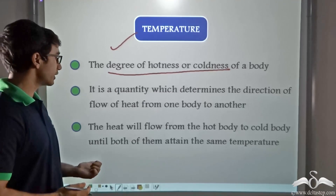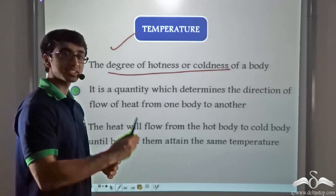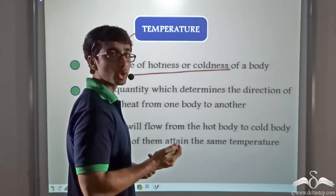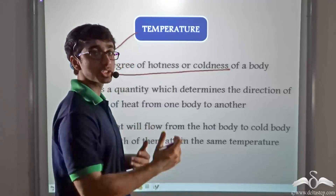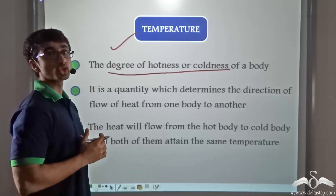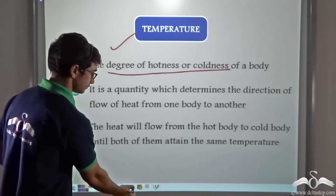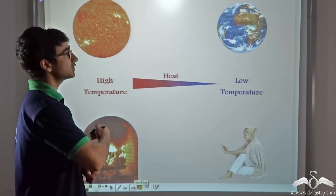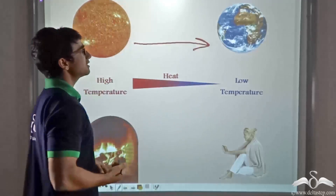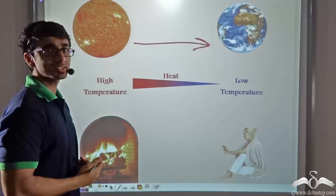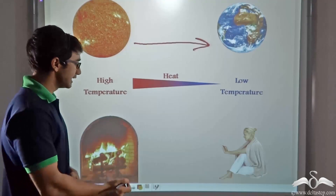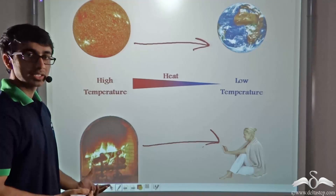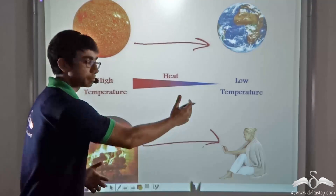Heat will flow from the hot body to the cold body until both of them attain the same temperature. That is, the hot body's temperature will come down and the cold body's temperature will go up, and heat transfer will continue for as long as both bodies do not attain the same temperature. So, just as we saw earlier, heat flowed from the sun to the earth because the sun is at a much higher temperature than the earth. Similarly, heat flowed from the fireplace to the person because the fireplace is at a much higher temperature than the person.